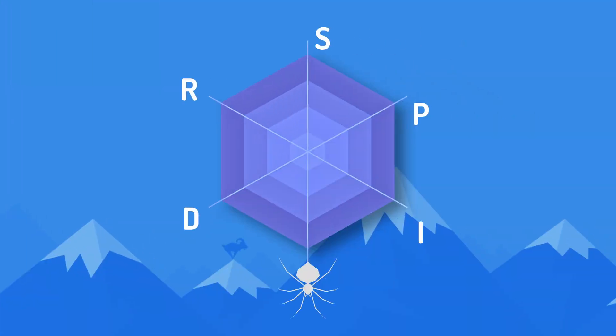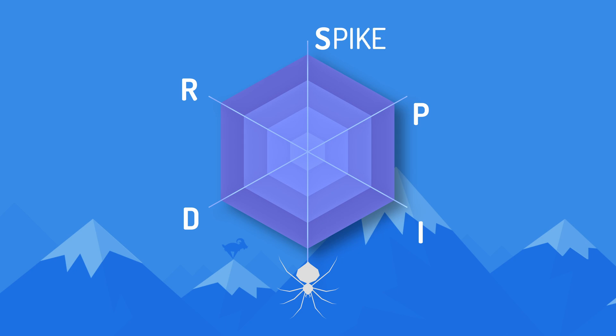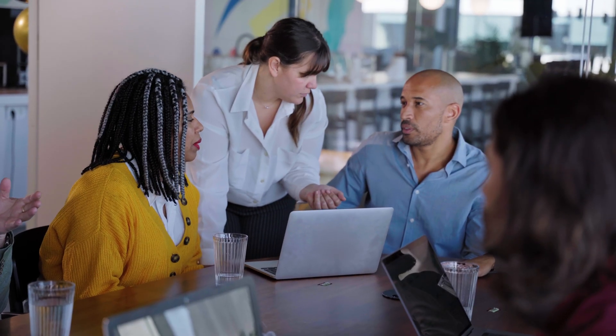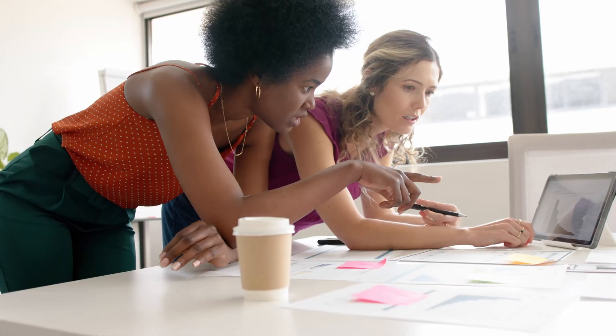Let's take a look at each technique in the SPIDER acronym and see how you can use it. The S stands for SPIKE. A SPIKE is an activity a team undertakes to learn more about some backlog item. Think of it as a research activity, but it may include prototyping or some experimental coding. During a SPIKE, a team isn't trying to develop the new functionality.